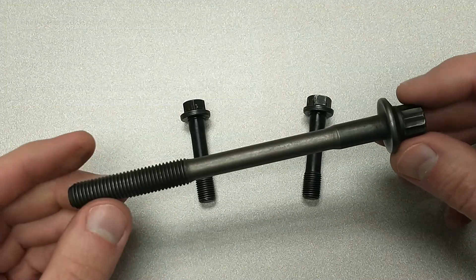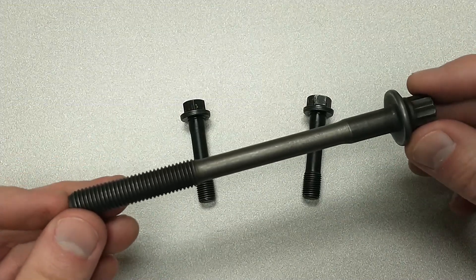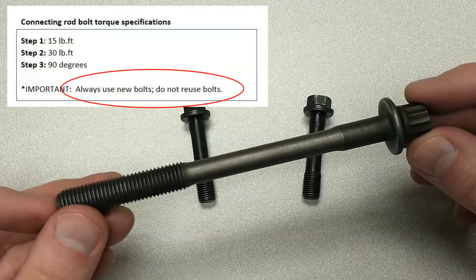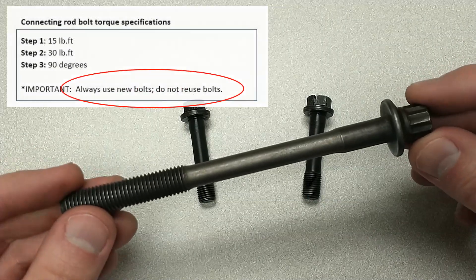Now, just because you rotate the bolt 90 degrees doesn't mean this is a torque-to-yield bolt, right? That's why you check your specifications to see if this bolt can be reused or if it should be replaced.